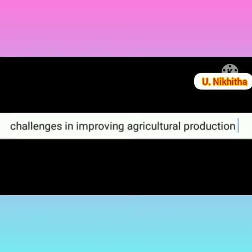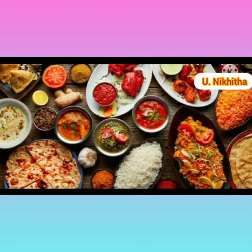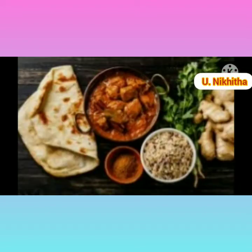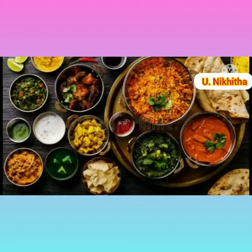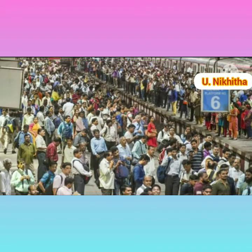My name is Yunikitam. I'm studying at Brilliant Model School, ninth class. Today we are going to be discussing challenges in improving agriculture production. Food is an important aspect of the sustenance and survival of human beings as well as other living organisms. Food is very essential to all living beings.